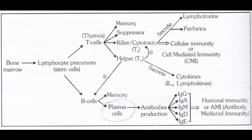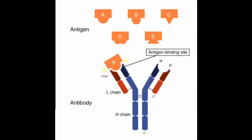T cells maturing in the thymus perform cell-mediated immunity, which accounts for around 70–80% of the body's immune system. B cells are responsible for humoral or antibody-mediated immunity, which makes up around 10–20% of our immunity.